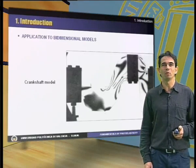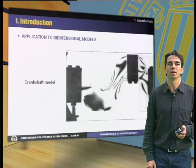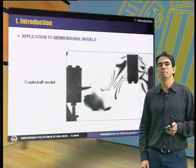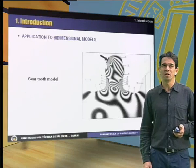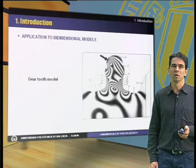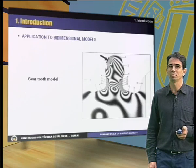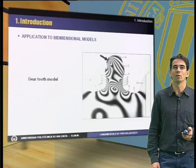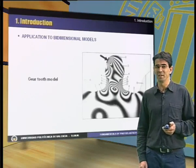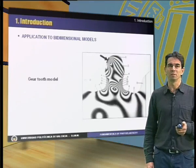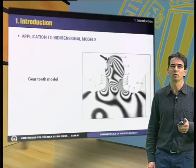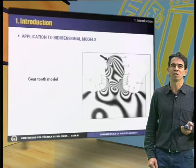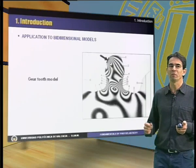Photoelastic techniques are applicable to two-dimensional models that represent the component to be analyzed. For example, one figure shows a section of a crankshaft model. Another example is the analysis of a gear tooth under load. The so-called isochromatic lines can be observed — these lines indicate the stress level at each point of the component under the applied loads. In real engineering practice, it is virtually impossible to obtain an analytical solution to such problems, so the use of the photoelastic method is especially useful to analyze stress raisers at re-entrant corners and fillets.